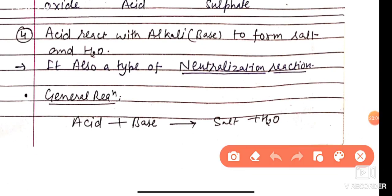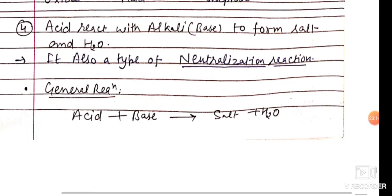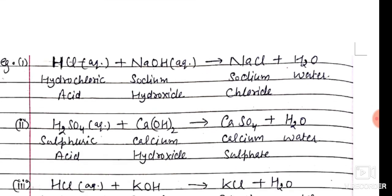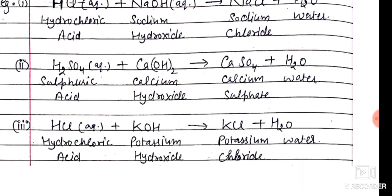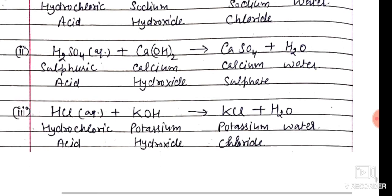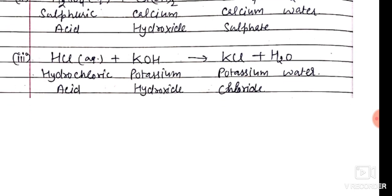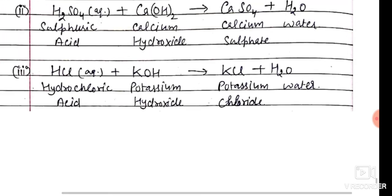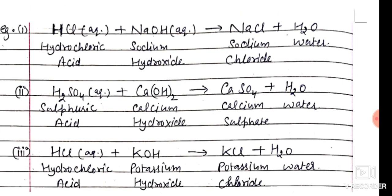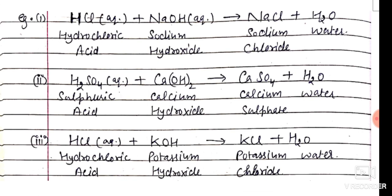Next is the Neutralization reaction. When an acid and a base react with each other, they form salt and water. Examples: HCl + NaOH → NaCl + H₂O; H₂SO₄ + Ca(OH)₂ → CaSO₄ + H₂O; HCl + KOH → KCl + H₂O. These are the chemical properties of acids. I hope you understand this part of the chapter. Thank you and have a nice day. Stay home, stay safe.